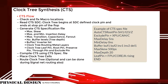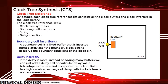Then compile CTS using the CTS spec file, place clock tree cells, and route the clock tree — which is optional and can be done during signal net routing. By default, each clock tree reference list contains all clock buffers and clock inverters in the logical library. The clock tree reference list is used for clock tree synthesis, boundary cell insertion, sizing, and delay insertion.